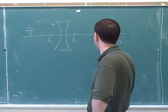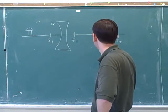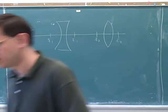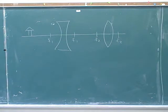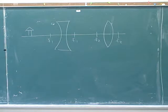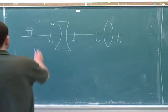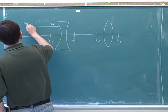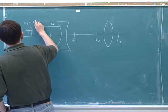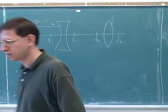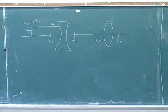Let's start trying to do some. So the first one goes parallel to the opposite. And then it's a diverging one. So it's going to only go up that way. Good. That's right.